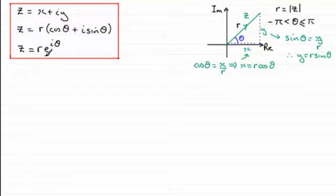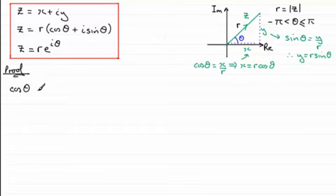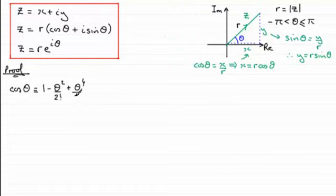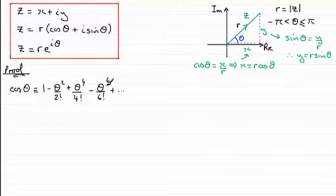So how do we go about proving this result? It can be shown through something called Maclaurin series that cos theta is identically equal to 1 minus theta squared over 2 factorial, plus theta to the power 4 over 4 factorial, minus theta to the power 6 over 6 factorial, and so on. You can see that the signs oscillate — the next term would be plus theta to the power 8 over 8 factorial, then minus theta to the power 10 over 10 factorial, and so on.